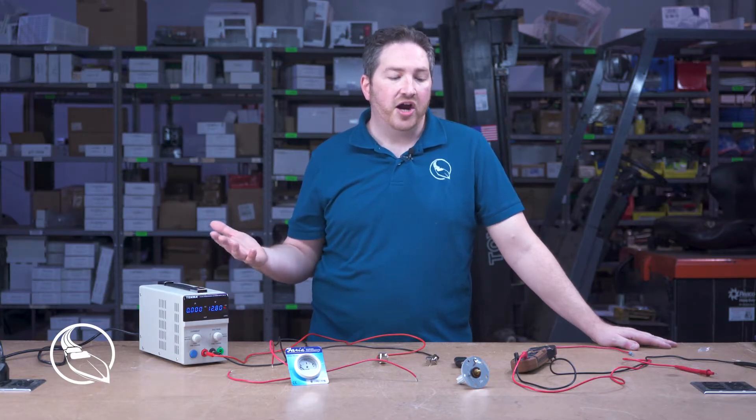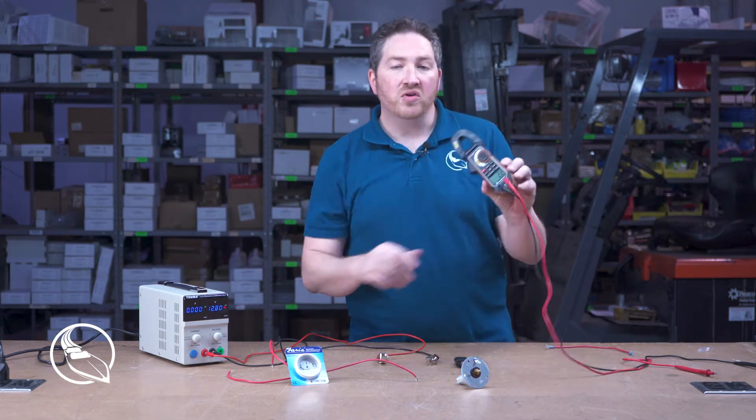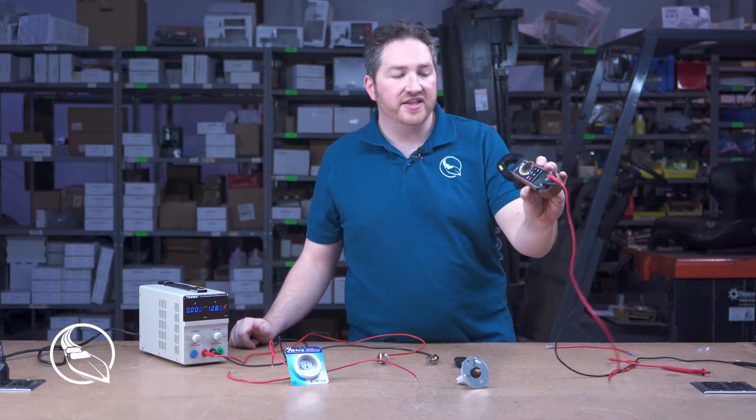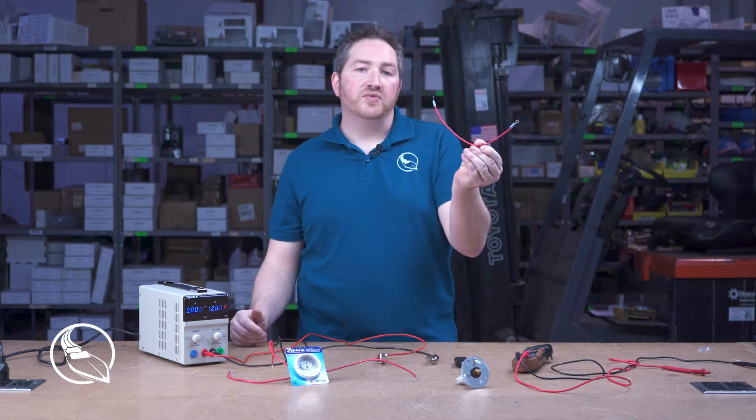If it stops working, there are several different components that could be causing an issue, and we're going to step through how to test each one. For the purposes of this video, we're going to have to use a couple of tools. We're using a Southwire multimeter. We do sell these in case you need one. You're going to need a multimeter or a meter of some sort for the testing, and you're also going to need a jumper wire as well.